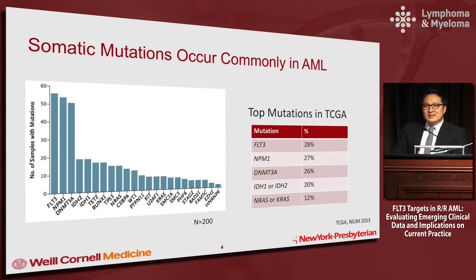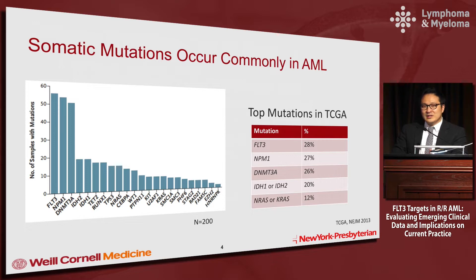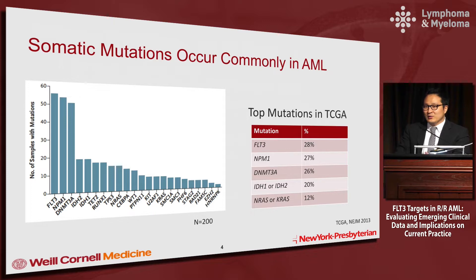This is data from the Cancer Genome Atlas TCGA dataset, and mutations are very common in AML. The top five mutated genes in the TCGA dataset are FLT3 at 20%, NPM1, DNMT3A, and IDH1 and IDH2, which occur in about 10% each of patients with AML. RAS mutations occur in about 12% of patients with AML. The IDH mutations occur in about 10% of patients with AML.